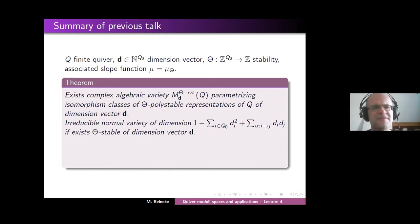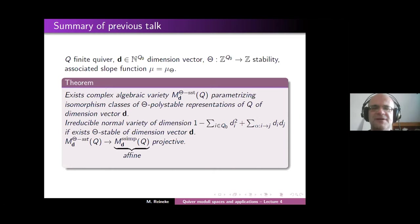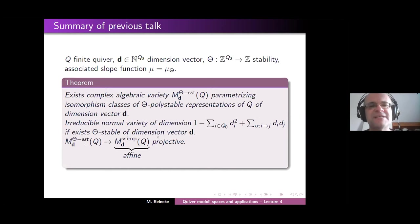What else was the content of the main theorem last time? We had a map from this moduli space parametrizing the semi-stables to the moduli space we introduced last week — the moduli space of semi-simples. You always have a canonical map from there to there, and it is always a projective morphism of algebraic varieties. And remember, this moduli space of semi-simples was affine.